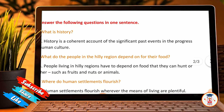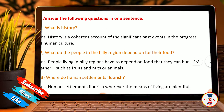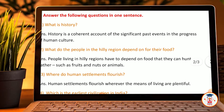Question number three: Answer the following questions in one sentence. First, what is history? History is a coherent account of significant past events in the progress of human culture.